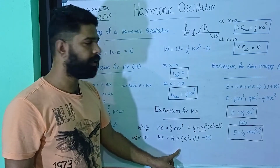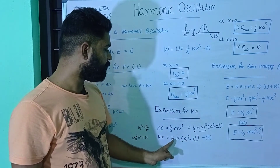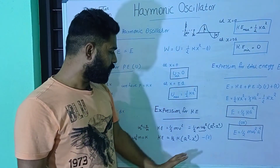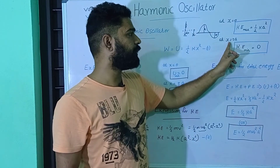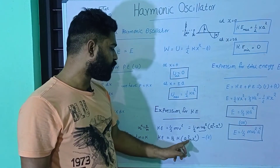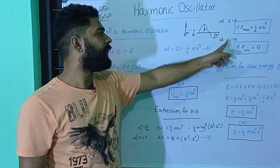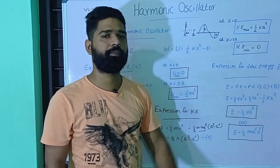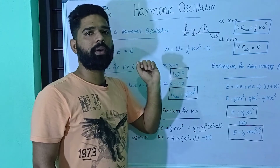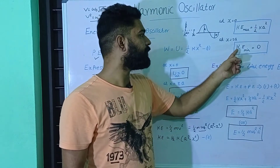At x equal to 0, the kinetic energy term (a² minus x²) equals a², so the kinetic energy is maximum and equals 1/2 kA². At x equal to plus or minus a, we have a² minus a² equals 0, so the kinetic energy equals 0 — that is the minimum. In a linear harmonic oscillation, kinetic energy maximum is 1/2 kA² and kinetic energy minimum is 0.